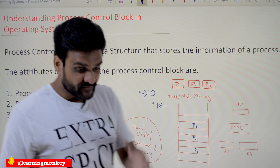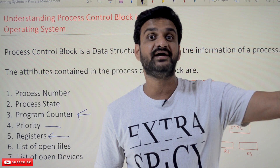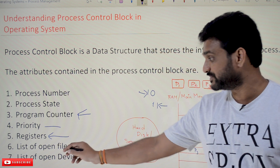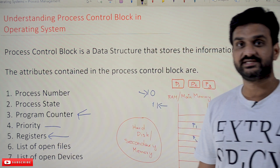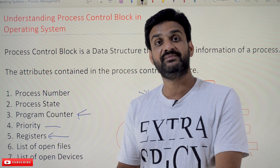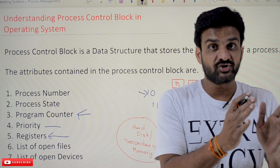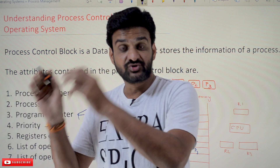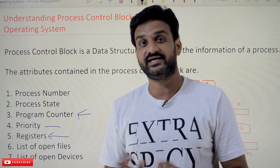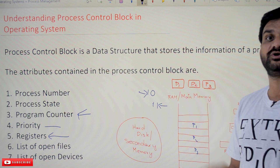The next attribute is list of open files. While programs are getting executed, they may open certain other files. The list of files opened by this process has to be maintained. Also, list of open devices — the devices opened by this particular process have to be maintained. For example, if you are working on a Word document and you try to print it, a printer gets opened, so the list of devices opened by this process has to be maintained.